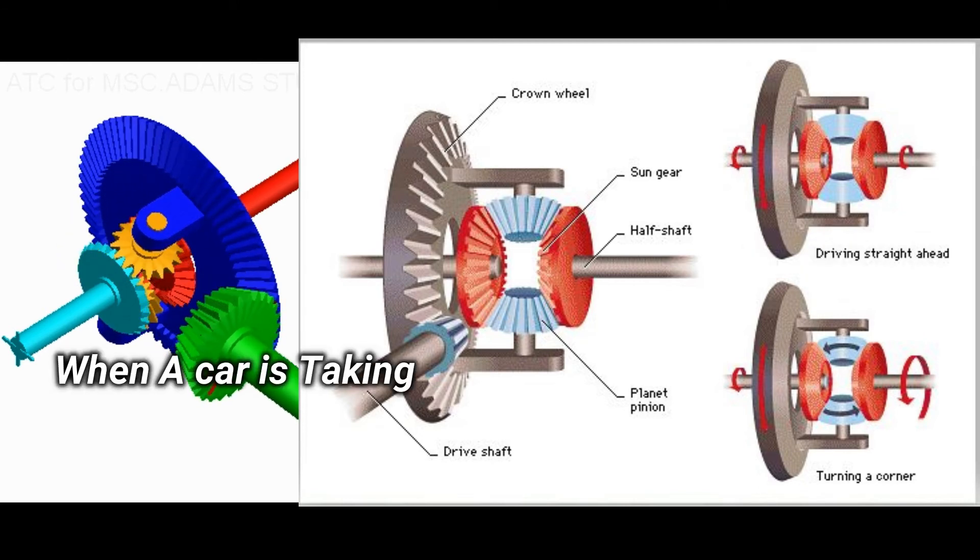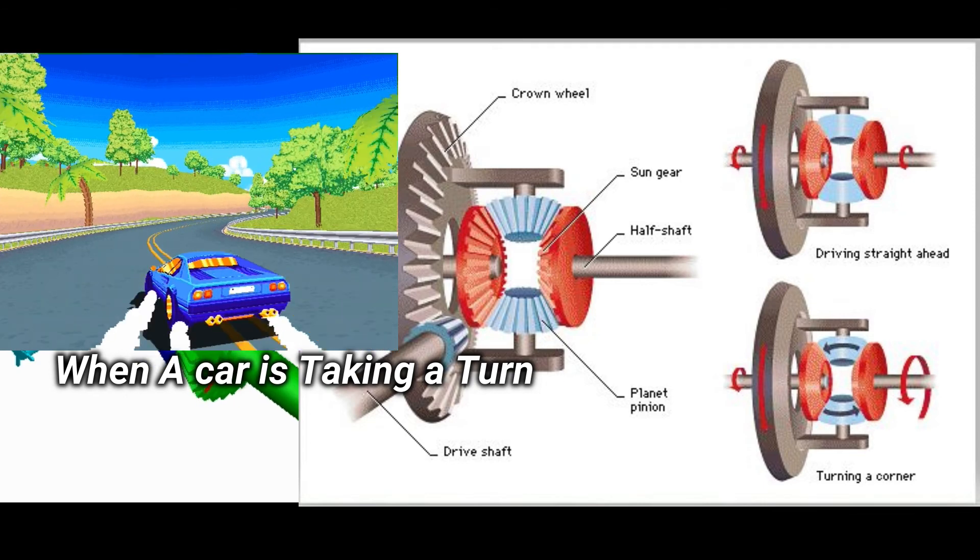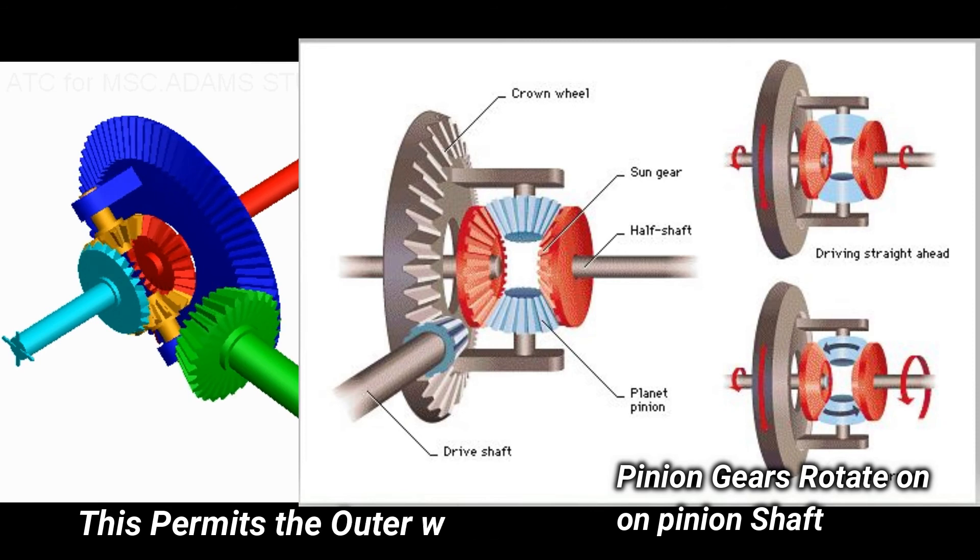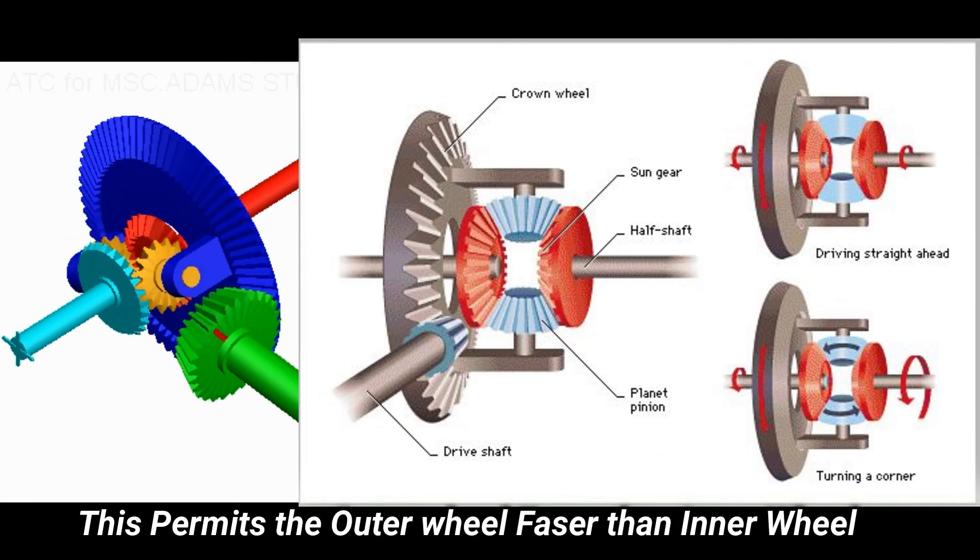However, when the car begins to round a curve, the differential pinion gears rotate on the pinion shaft. This permits the outer wheel to turn faster than the inner wheel.